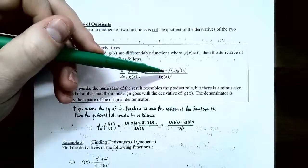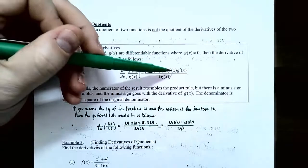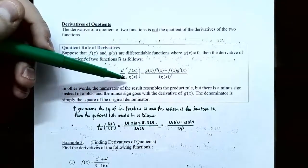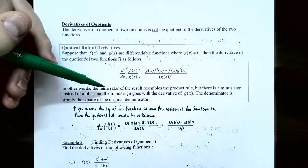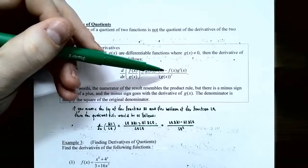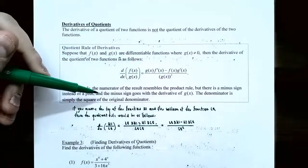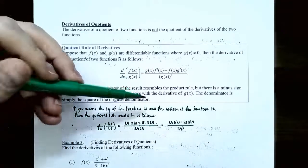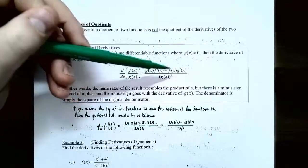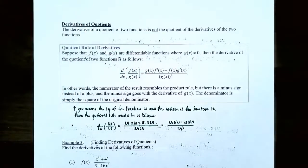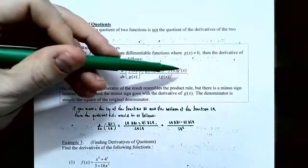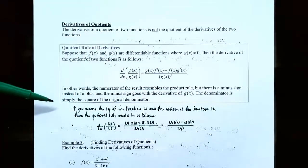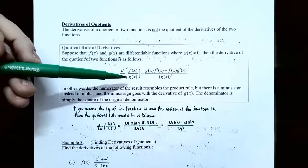Remember, the product rule had addition, but the quotient rule has subtraction. You take the numerator f of x and multiply by the derivative of the denominator, then divide the entire numerator by the denominator squared. The numerator of the derivative resembles the product rule except it has a minus sign instead of an addition sign. The negative sign is in front of g prime of x times f of x — so you have g of x times f prime first, then subtract f of x times g prime of x. The denominator is the square of the original denominator, g of x squared.